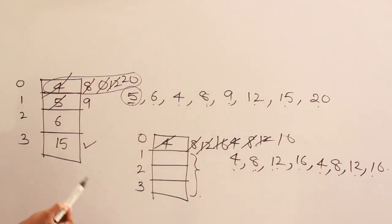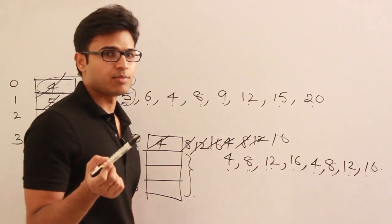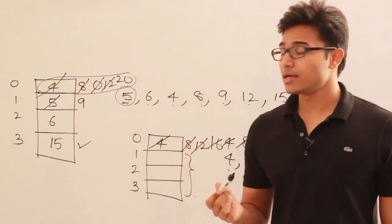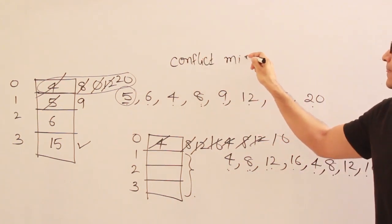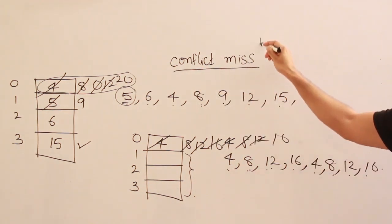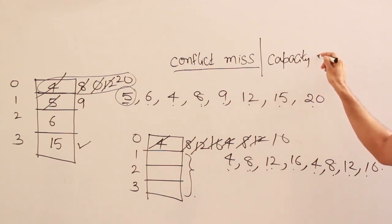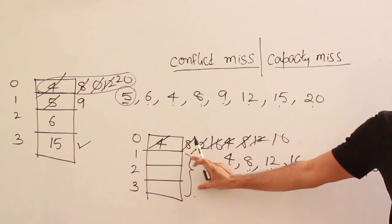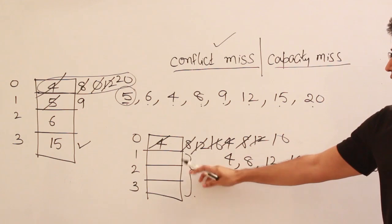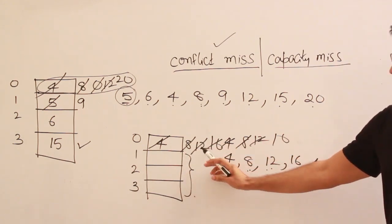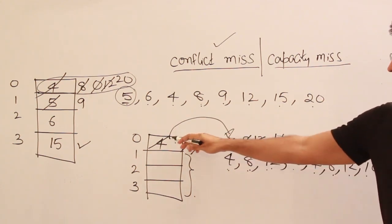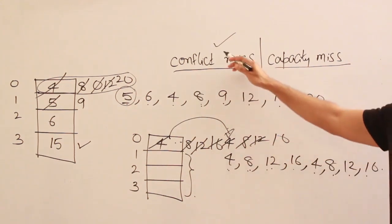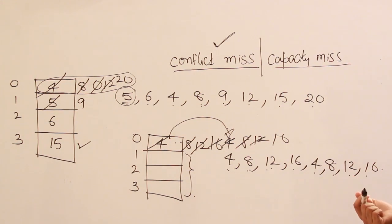That is the disadvantage of direct mapping. Why does this happen? Because we have restricted main memory blocks to occupy only one specific cache line. This scenario — where a miss occurs even though other cache lines are free — is called a conflict miss. Direct mapping uses a many-to-one mapping, which makes things simple but causes conflict misses.